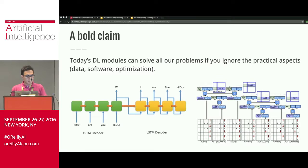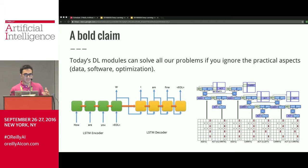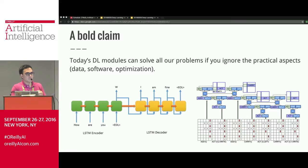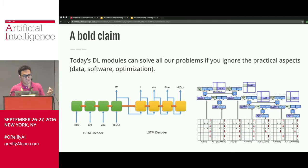I'll make a bold claim: today's deep learning modules can solve all of our problems if you just ignore the practical aspects — data, software, and optimization. If you gave me a problem, I could probably design a neural network that with some magic parameters could solve it. You could use a sequence-to-sequence framework for input and output with recurrent neural networks for variable-length sequences. In the middle you can put a neural program interpreter, which allows learning subroutines and playing with pointers — giving you the power of a full computer, except now it can learn to do exactly what you want.